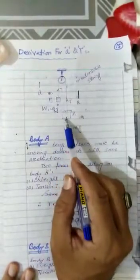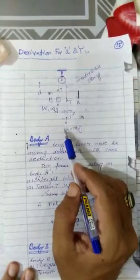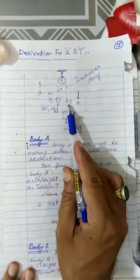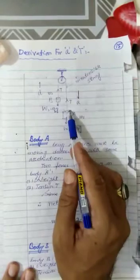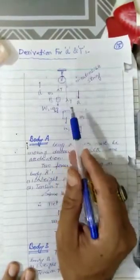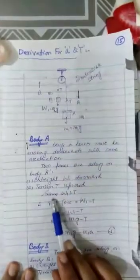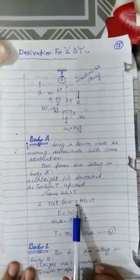Now since body A is moving vertically downward, it means we can say W1 force is greater than this opposite force tension T. If tension is greater than this body must go towards upward side. But since body is moving downward, it means W1 is greater than T.